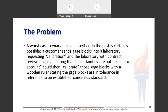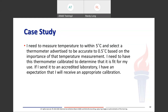A worst-case scenario I've described on many occasions is certainly possible. A customer sends a gauge block into a laboratory requesting calibration, and the laboratory with contract review language says that all uncertainties are not taken into account, but then calibrates those gauge blocks with a wooden ruler stating the gauge blocks are in tolerance in reference to an established consensus standard — which would be an absolute disaster because a wooden ruler is all over the place.